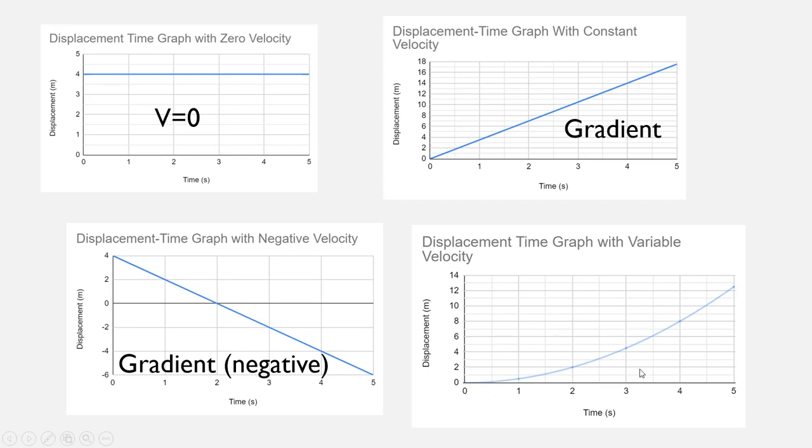So we can find out the velocity at time equals two or find the velocity at time equals three. But there isn't going to be one number that describes the velocity everywhere. And the way that you can find the velocity at a specific point in this graph is to find the gradient of a tangent at that point.